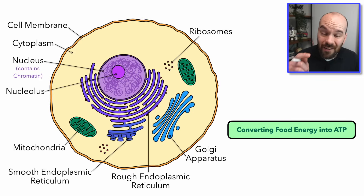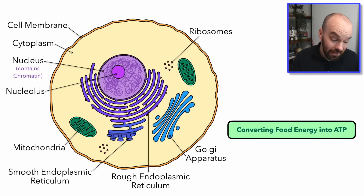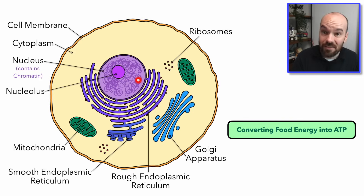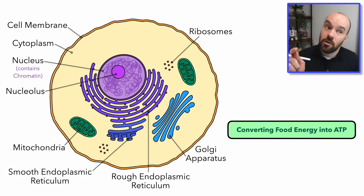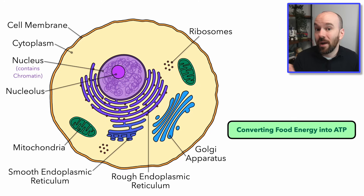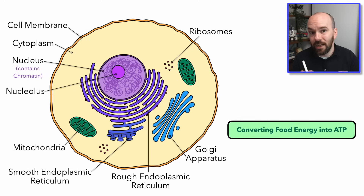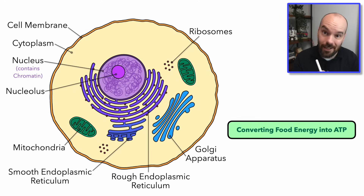Fun fact about the mitochondria: they have their own DNA, which is different than the DNA contained inside your nucleus. All of your mitochondria you got from your biological mother — none from your biological father — which is different than the DNA in your nucleus, which is a combination of both your biological father's and biological mother's DNA. Mitochondria are pretty wild.